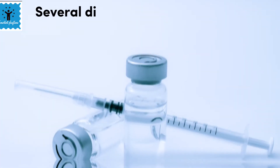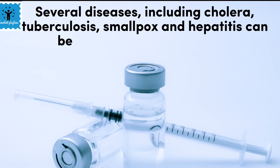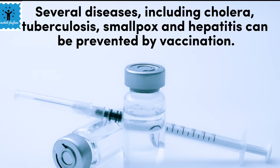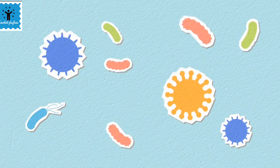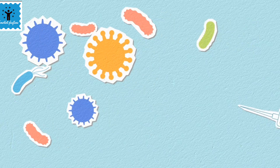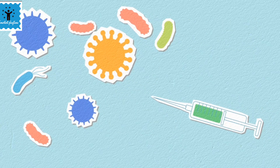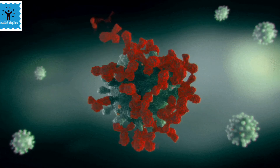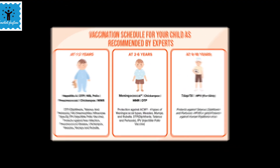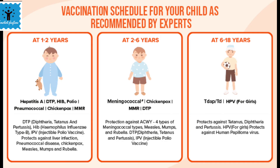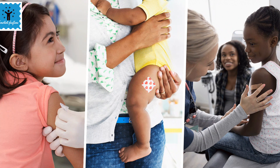This is how a vaccine works. Several diseases including cholera, tuberculosis, smallpox, and hepatitis can be prevented by vaccination. Vaccines help the body recognize a disease-causing microorganism by imitating an infection, so they cause an immune response when the body encounters the same pathogen. That's why vaccinations are given during childhood to protect children from several diseases, and the necessary vaccines are available in nearby hospitals.